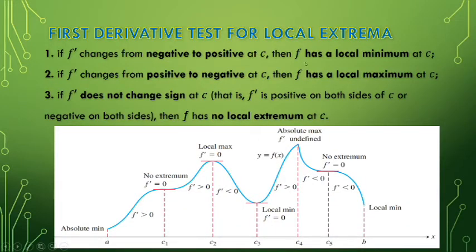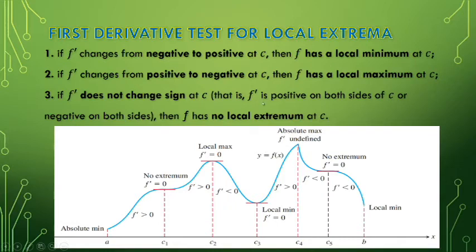The first derivative test for local extrema: if f' changes from negative to positive at point c, then f has a local minimum at c. If f' changes from positive to negative at c, then f has a local maximum — meaning you were going up, then suddenly go down, so you're at a maximum. Similarly, going down then going up gives a local minimum. If f' does not change sign at that point — positive on both sides or negative on both sides — then f has no local extremum at point c.